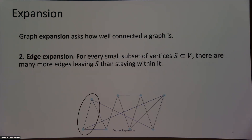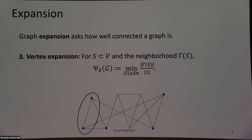I could also come up with more combinatorial ideas of expansion. For edge expansion, I take a subset of vertices and compare the number of edges going out of that subset versus the edges staying within it. Similarly, vertex expansion asks the same question but for vertices: I take some subset and count the number of vertices adjacent to that subset versus the number of vertices in that subset.